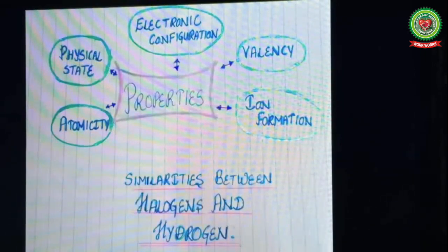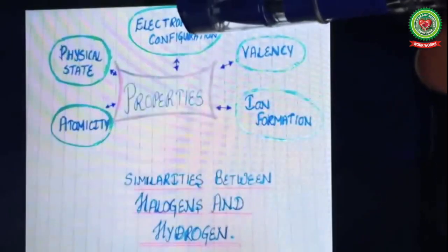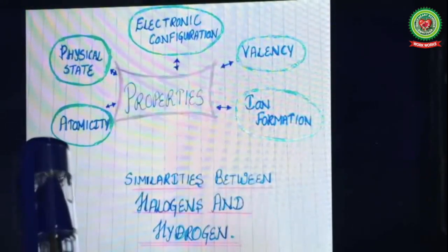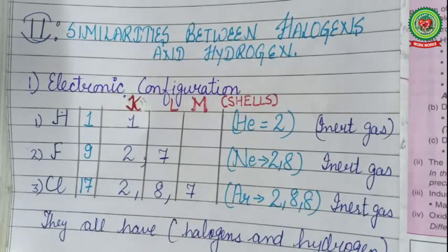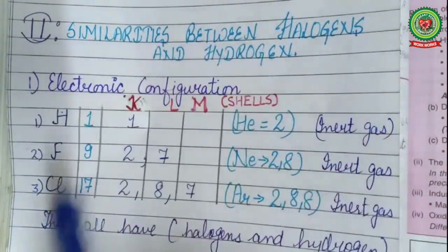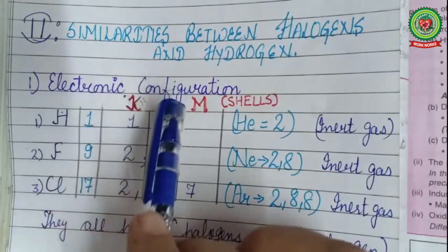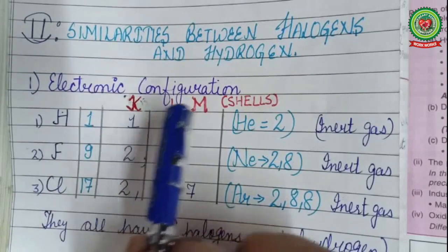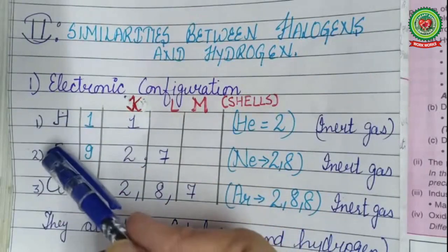Now let's move to the similarities between hydrogen and halogens (Group 17 elements). The properties that are similar include: electronic configuration, valency, ion formation, atomicity, and physical state.